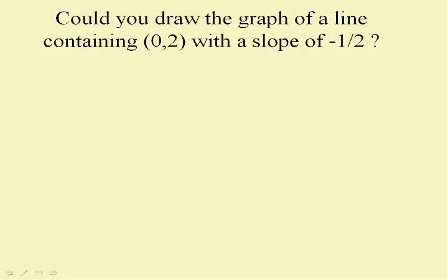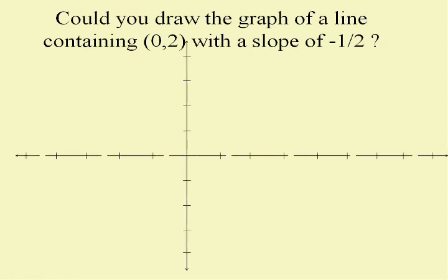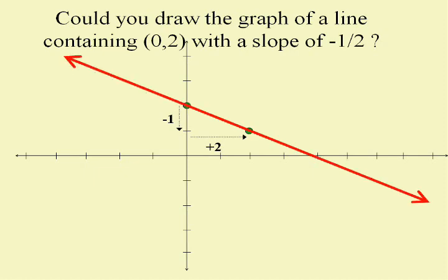I propose that if I gave you one point and a slope, you could draw that line on a graph. Let's draw the graph of a line containing the point zero-two with slope negative one-half. We know where that is: go over zero and up two. Negative one-half means between any two points we go down one and over two. From zero-two we go down one and over two, landing on another point on the line. With two points, we know where the line is.